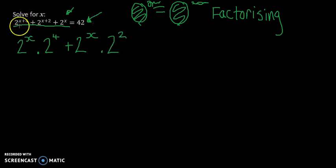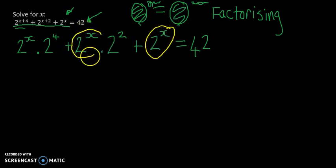Now all I'm doing is taking the term and changing it to 2 to the power of x times 2 to the power of 4. And let's do this last one. Now it's much easier to take out the common factor of 2 to the power of x.